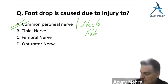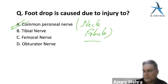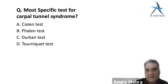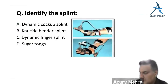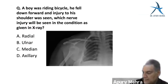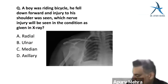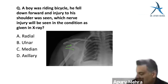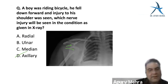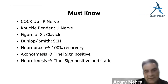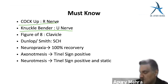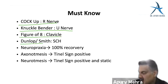Adson's, Roos, and Wright's tests are for thoracic outlet syndrome. Allen's test is for patency of radial and ulnar arteries. Foot drop: common peroneal nerve injury around the neck of fibula. Shoulder dislocation: glenoid visible but head displaced — axillary nerve is damaged. Cock-up splint for radial nerve; knuckle bender splint for ulnar nerve more than median; figure-of-eight bandage for clavicle; Dunlop/Smith traction for supracondylar humerus.